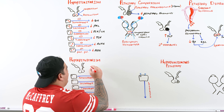Always check the clinical history for antidopaminergic medications or severe hypothyroidism before assuming the cause is a pituitary microadenoma. Importantly, microadenomas produce little or no mass effect — they are too small to compress the optic chiasma or raise intracranial pressure, so patients typically won't have bitemporal hemianopia or secondary headaches.